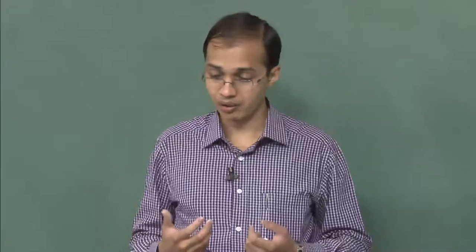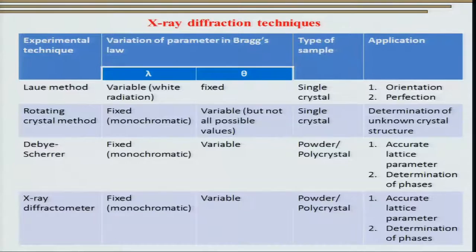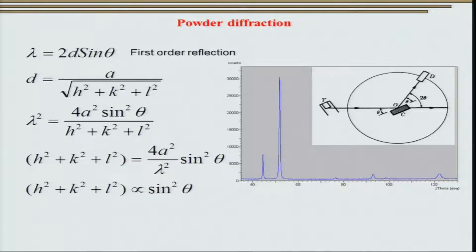What we most commonly use at laboratory scale is essentially the powder diffractometer, in which the wavelength is fixed and θ is varied. This technique is used routinely to characterize powders as well as polycrystalline materials. It provides a wealth of information about the lattice parameter, the phases present, and various other things which I will demonstrate in the later slides.